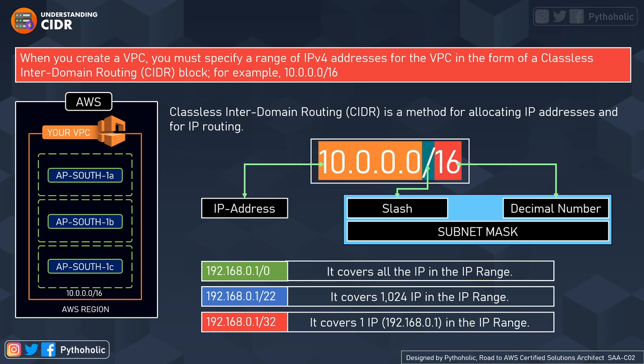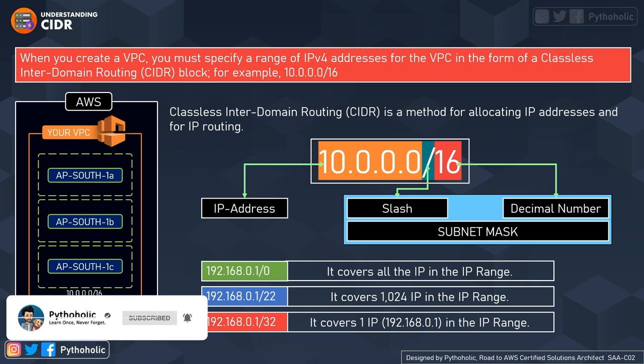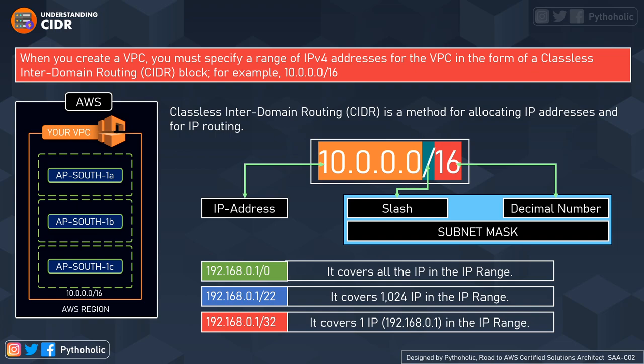Think of 10.0.0.1/16 as an IPv4 address range that makes up a VPC. This block is divided into three parts: the IP address, the slash, and the decimal number. The first half represents the IP address and the second half is the subnet mask — so collectively the slash and decimal together form the subnet mask. As you can see in the image, a VPC moves across all availability zones, and what we create are smaller subgroups called subnets.